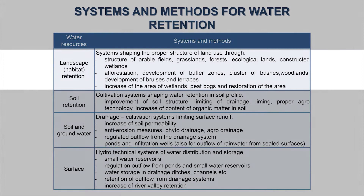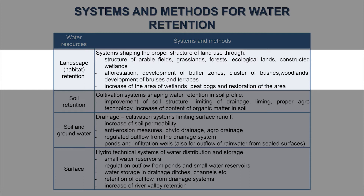Landscape retention can be achieved by a proper structure of arable fields, grassland, forest, and green areas — through afforestation, development of buffer zones, clusters of bushes, woodlands, development of terraces, and of course increasing wetland areas.